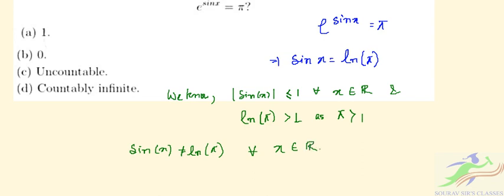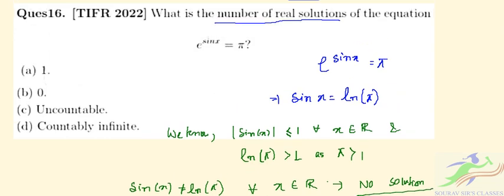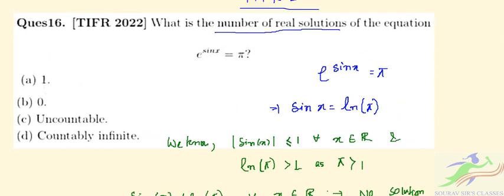So we have to find the number of solutions for this equation. There are no real solutions for this particular equation. Therefore, the correct option for question 16 is (b), that is zero.